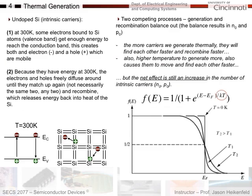Now let's go into something new in a bit more detail. Assuming undoped silicon with all intrinsic carriers at 300K, most electrons are bound to silicon in the valence band. Some gain enough energy to reach the conduction band and become freely conducting. An electron from the valence band moves up to form a free electron, creating a hole in the valence band — an electron-hole pair. Both the electron and the hole are mobile.